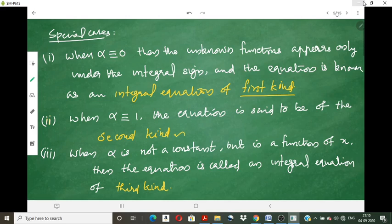Whether it is Fredholm or Volterra type with alpha equal to 1, it is known respectively as the Fredholm Integral Equation of Second Kind or the Volterra Integral Equation of Second Kind. If alpha is not a constant but is prescribed as a function of x, then that equation is sometimes known as an integral equation of the third kind.